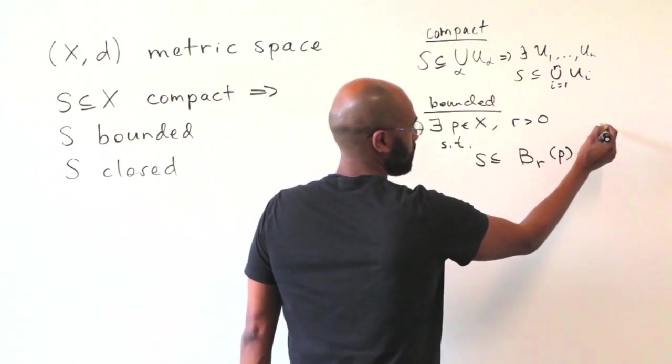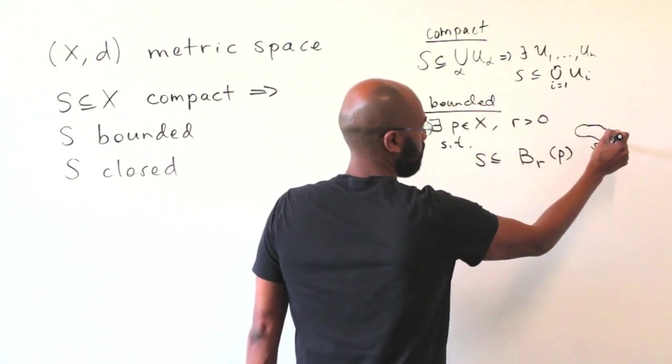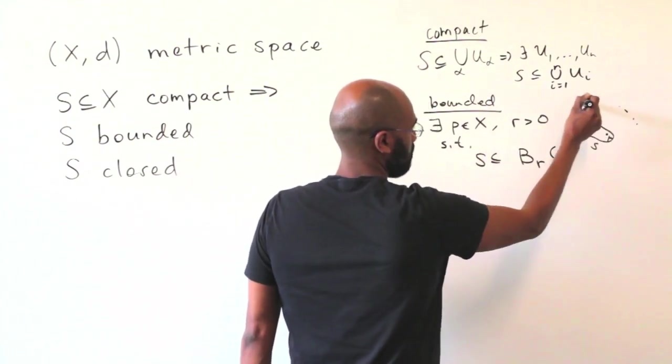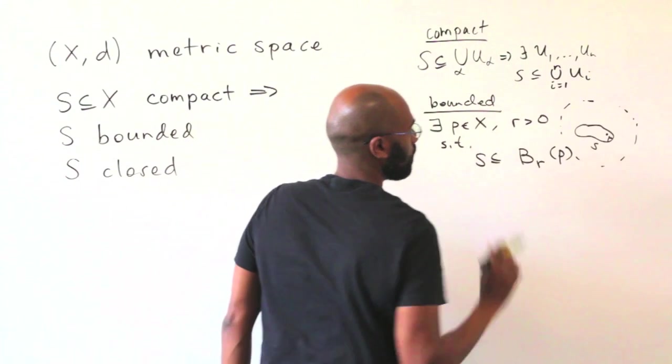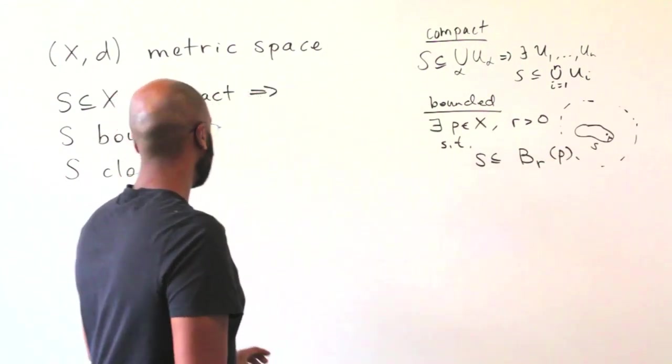Right, so the picture here is you have your blob S, you pick some point and there's this ball of radius R where your set sits inside.